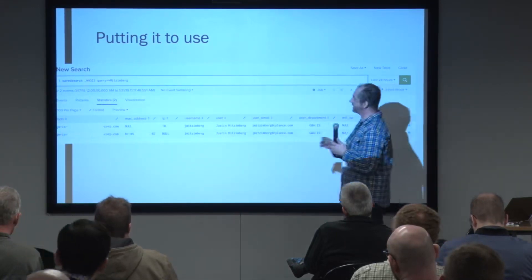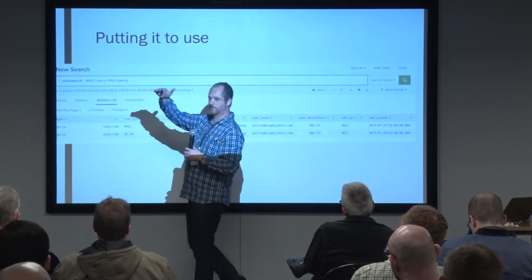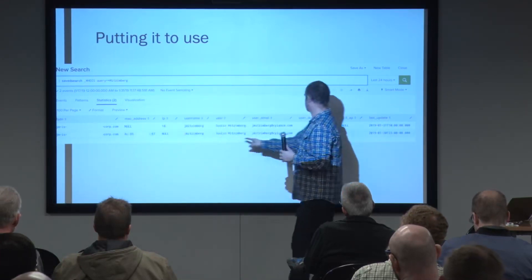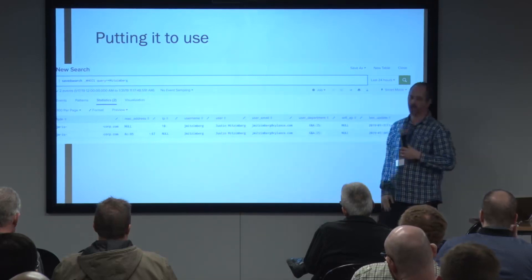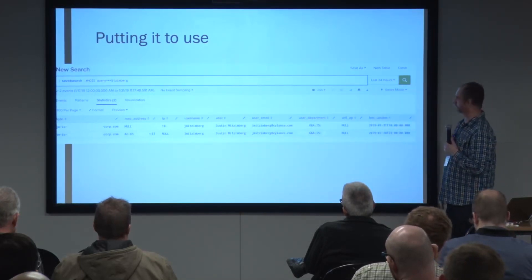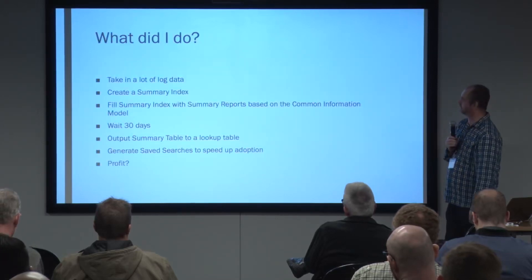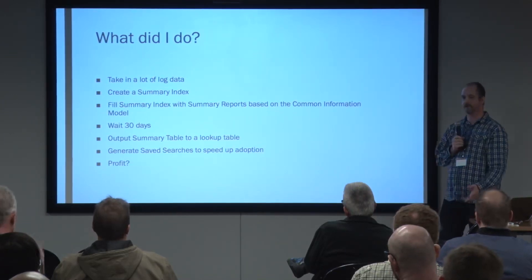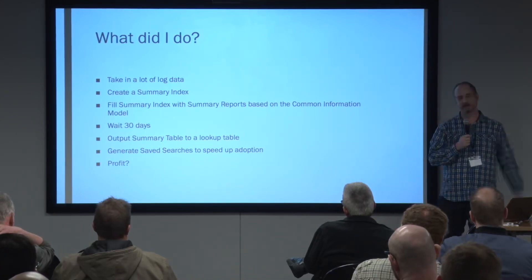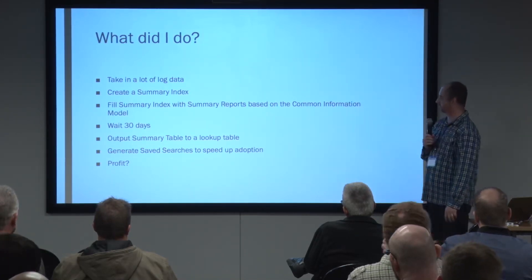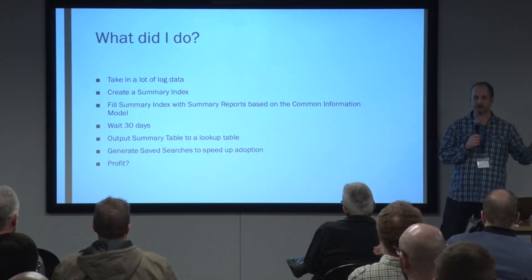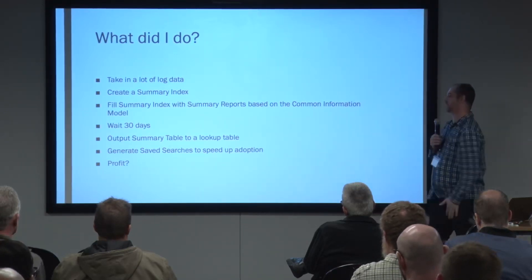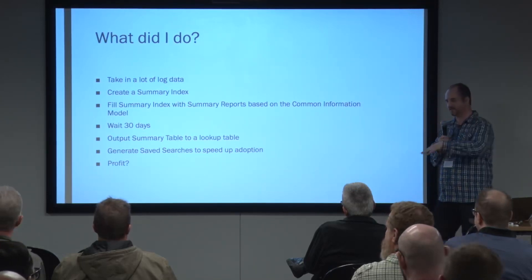This is me, this is my computer. I created a saved search called 'who is' that does Splunk poetry. All I have to do is query my name and it gives me my computer name, my MAC address, the last time I checked in, and all my particulars. So now if I'm looking up an incident, I have a throat to choke. I took in a lot of log data, created a summary index, put a common information model on it, and waited 30 days — though you don't have to. Splunk allows you to run summary reports over historical data, but I didn't want to do that because it was expensive. After 30 days, I output that summary table to a lookup table every day, giving me an updated asset inventory of everyone who's been on your network for the last 30, 60, or 90 days. Everything cycles out as it gets old.